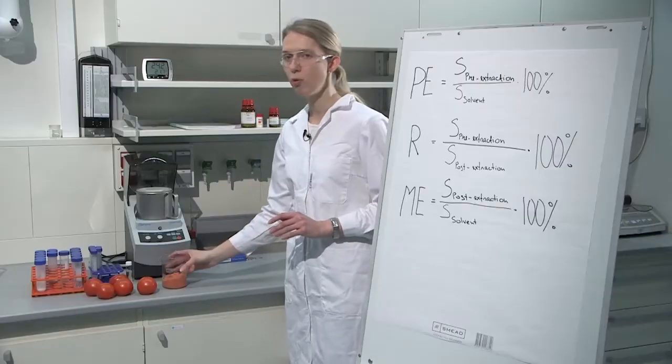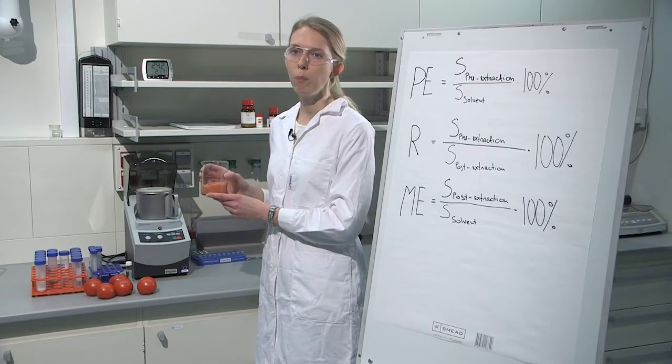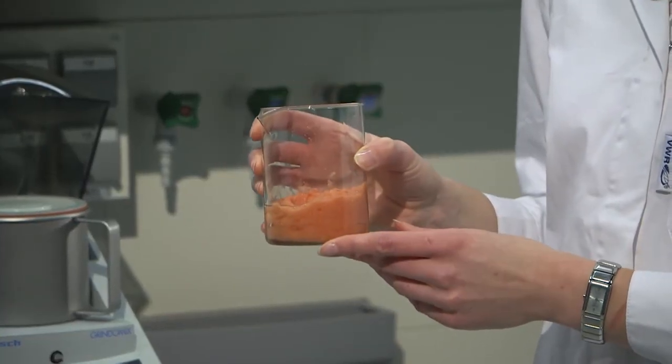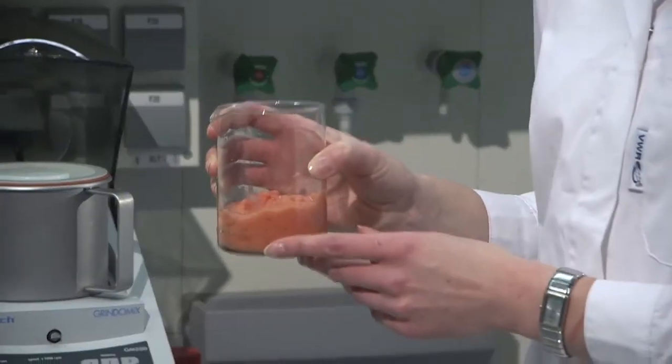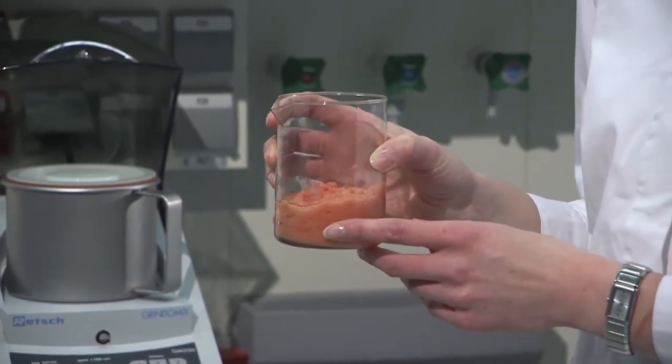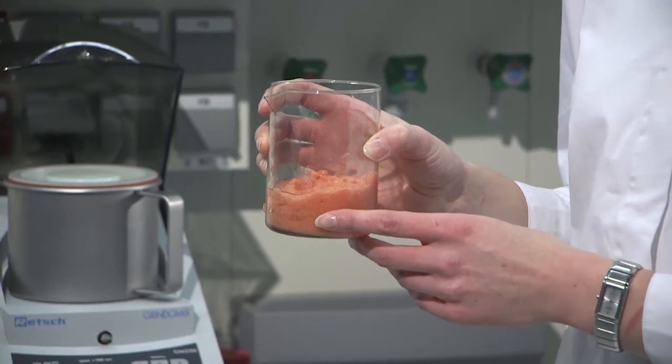Here we have already ready the blank homogenized tomato sample and we will start with spiking this sample. Before we can actually carry out the sample spiking, we should consider at what concentrations we are going to do this spiking.